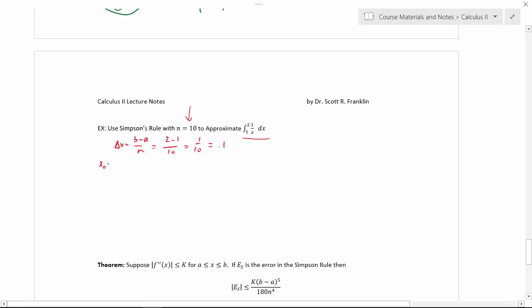And so we start with x0 equals the leftmost limit, that is 1, and then x1 is going to be 1.1, x2—notice I'm adding delta x each time—is 1.2, x3 is 1.3, and I'm going to get lazy and just go all the way out to x10 which would be 2.